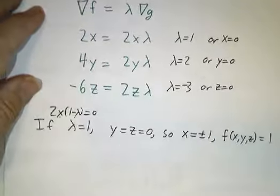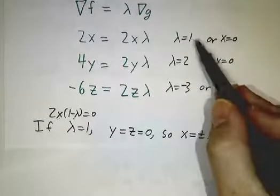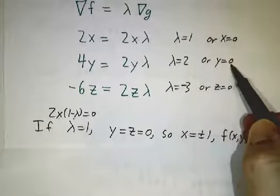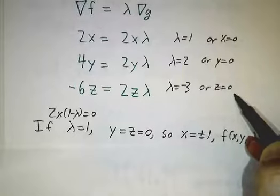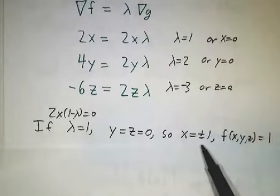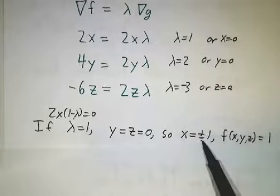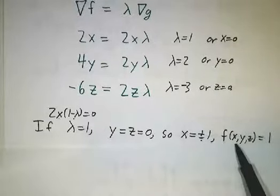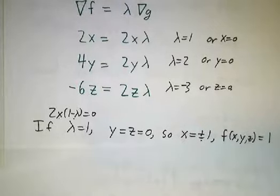So we've got three possibilities. If lambda equals 1, then y has to be 0 and z has to be 0. And if y and z are 0, x has to be plus or minus 1 since we're on the unit sphere. And you plug in what you get for f, and you get 1.